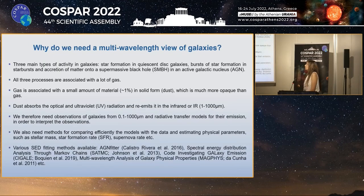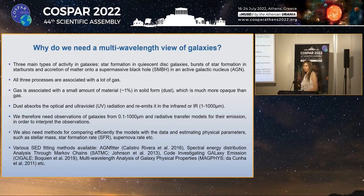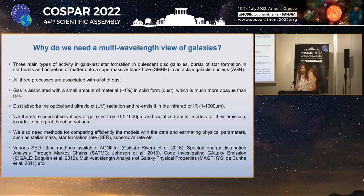We need multi-wavelength observations of galaxies. This is because there are three main types of activity in galaxies: normal star formation, starburst, and AGN. These three processes are associated with a lot of gas, which is associated with dust. Dust absorbs the optical and ultraviolet radiation and re-emits it in the infrared. So we need observations from the ultraviolet to the millimeter.